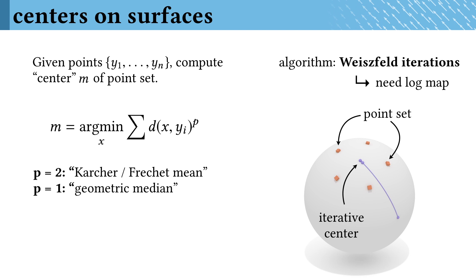Here's a simple example where we compute the center of the five square orange points. Our estimate is the purple trajectory, which quickly converges to the right answer.